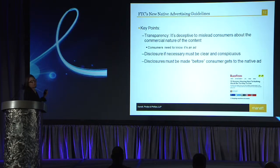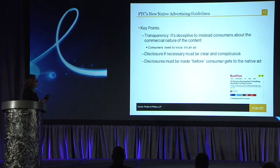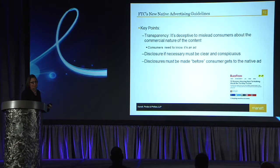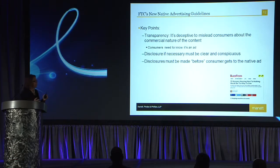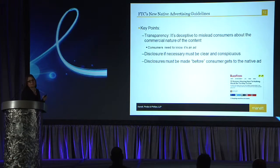There are really three key points to these guidelines. The first is transparency — the general principle that it is misleading if consumers cannot differentiate editorial from commercial content. If it's an ad and an advertiser paid for it, that needs to be disclosed. And if disclosure is necessary, it has to be clear and conspicuous.